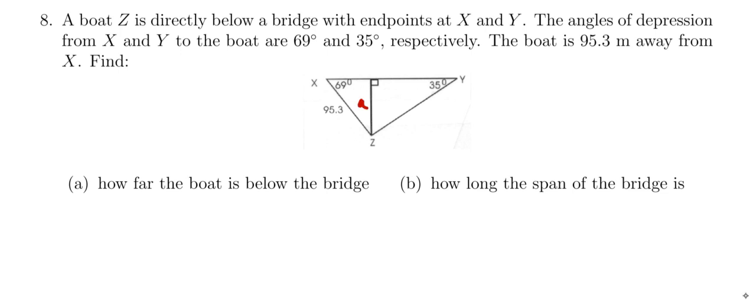So in the triangle on the left, I can see that the tangent of 69 degrees is going to equal... Oh, sorry. Not the tangent. I am going to use the tangent in just a second here. But I'm looking for the opposite, and I've got the hypotenuse. This is going to be the sine of 69 degrees is going to equal A over 95.3.